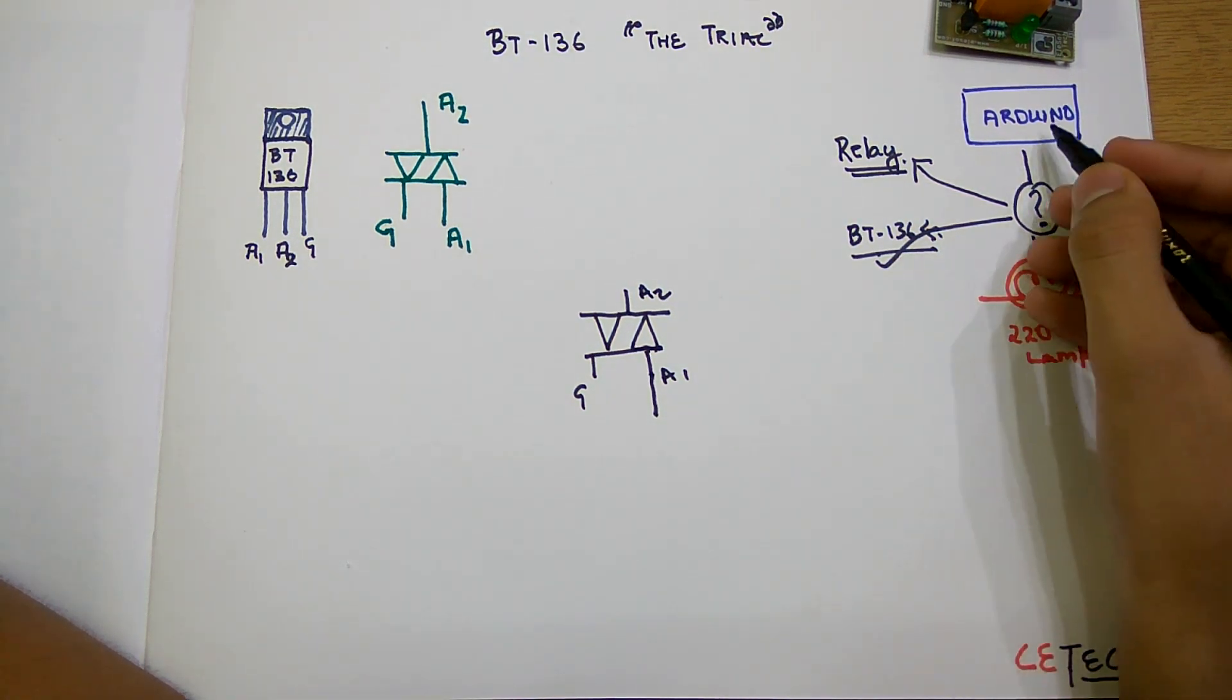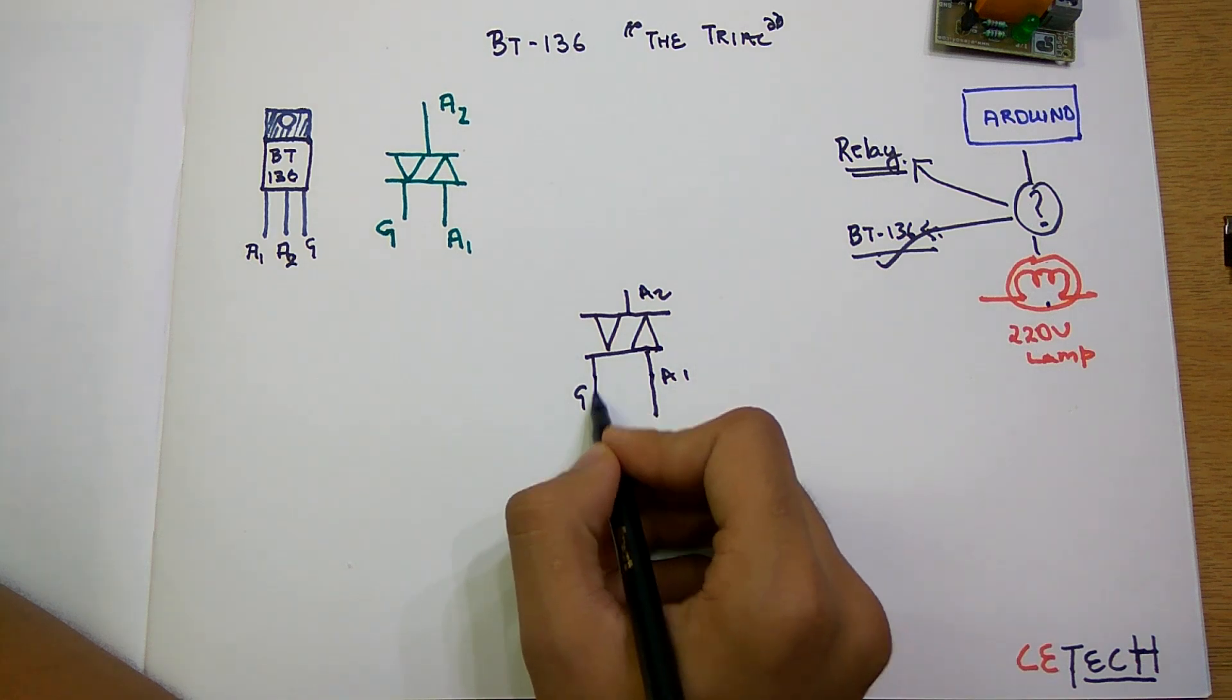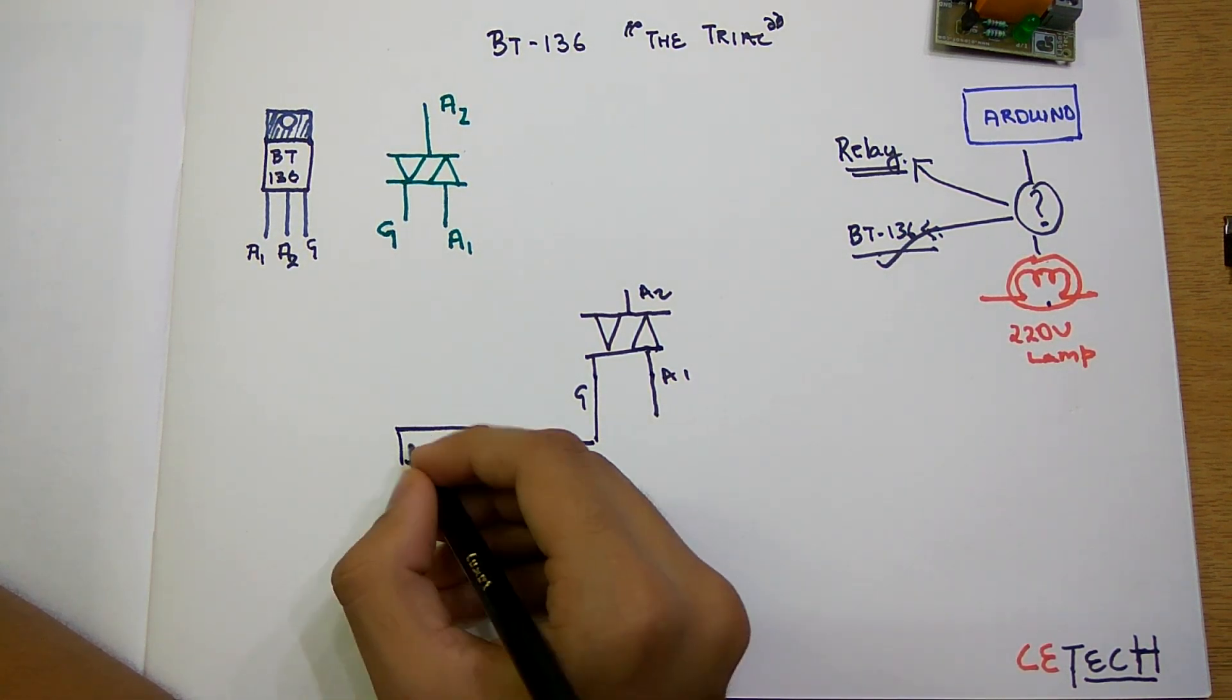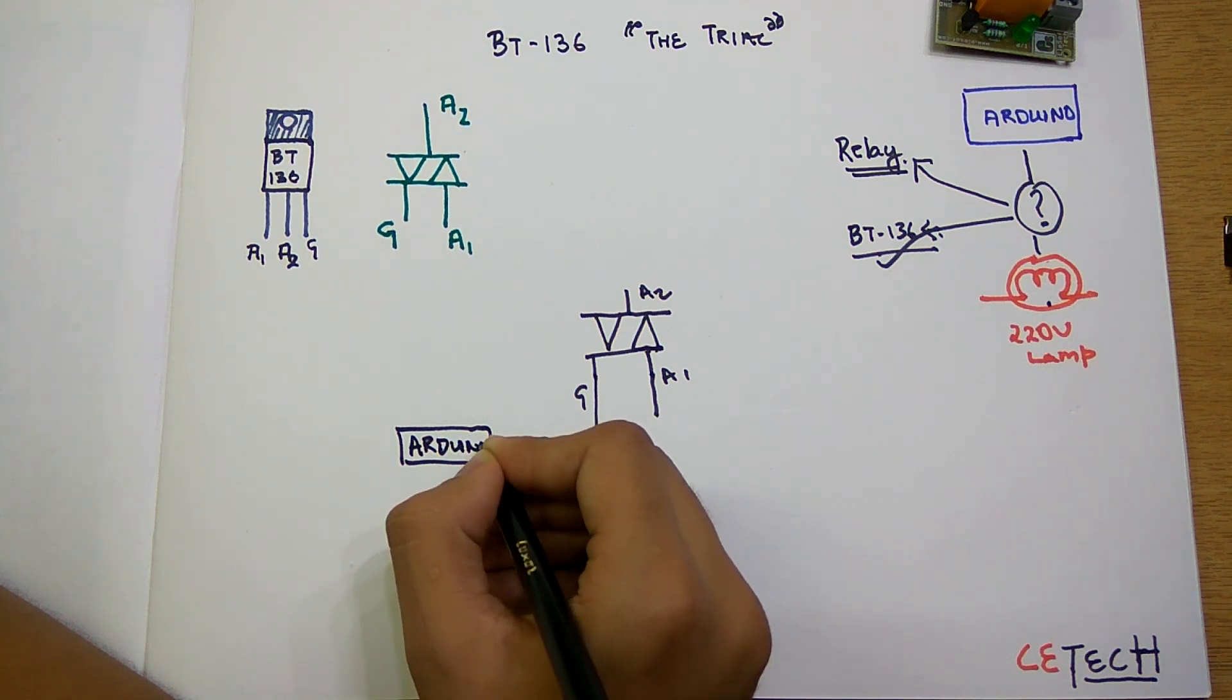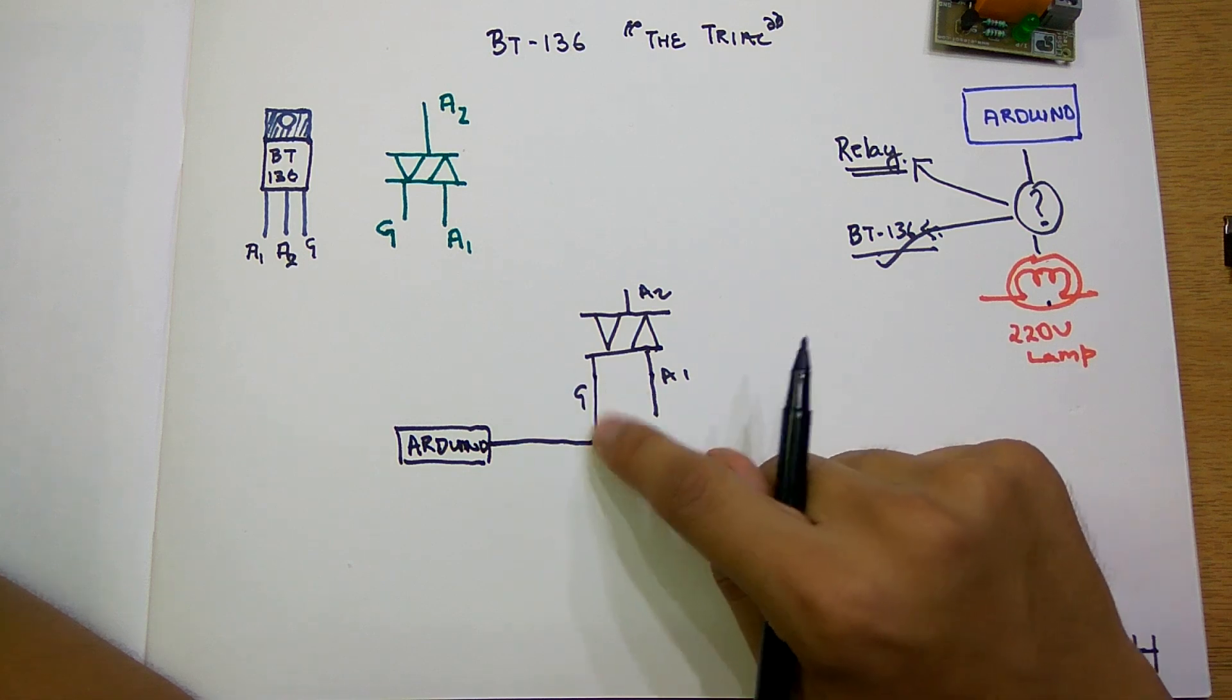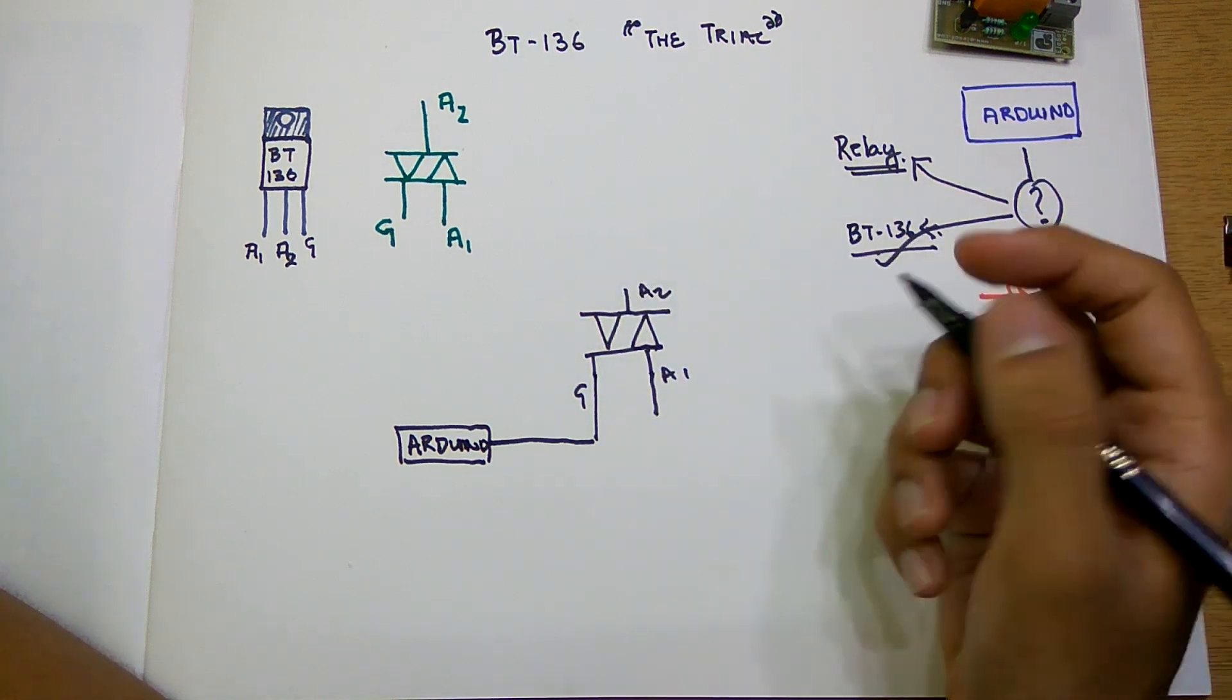So firstly, we have to connect a signal generating device, which here is the Arduino. This Arduino will be connected to the gate.